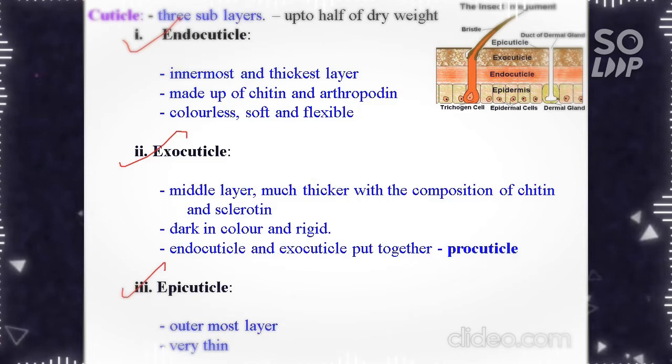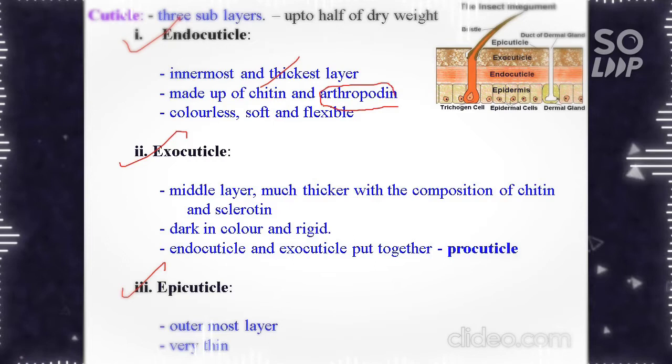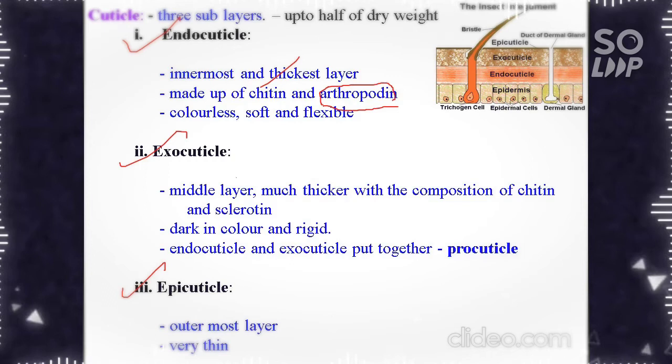The endocuticle is the innermost and thickest layer made up of chitin and arthropodin. It is colorless, soft and flexible due to the presence of arthropodin.